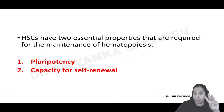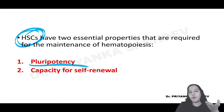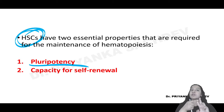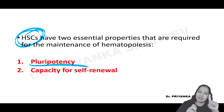Hematopoietic stem cells have two properties. Number one: pluripotency. They are pluripotent, which is why they give rise to RBCs, all WBCs, and platelets. Number two: they have the capacity of self-renewal - they undergo mitosis and cell division to maintain themselves.